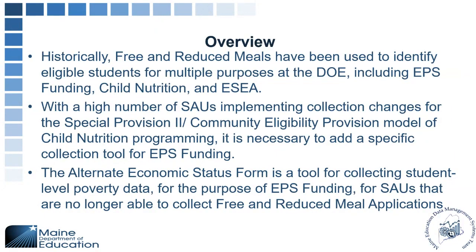This is some background on why we have this alternate economic status form. Historically, we've been able to use the free and reduced lunch meal forms for purposes of EPS funding, child nutrition, and ESEA. However, with the implementation of special provision two and community eligibility provision, this model does not allow for the collection of free and reduced lunch forms. So the alternate economic status form has been implemented for collecting student-level poverty data for the purpose of EPS-specific funding.